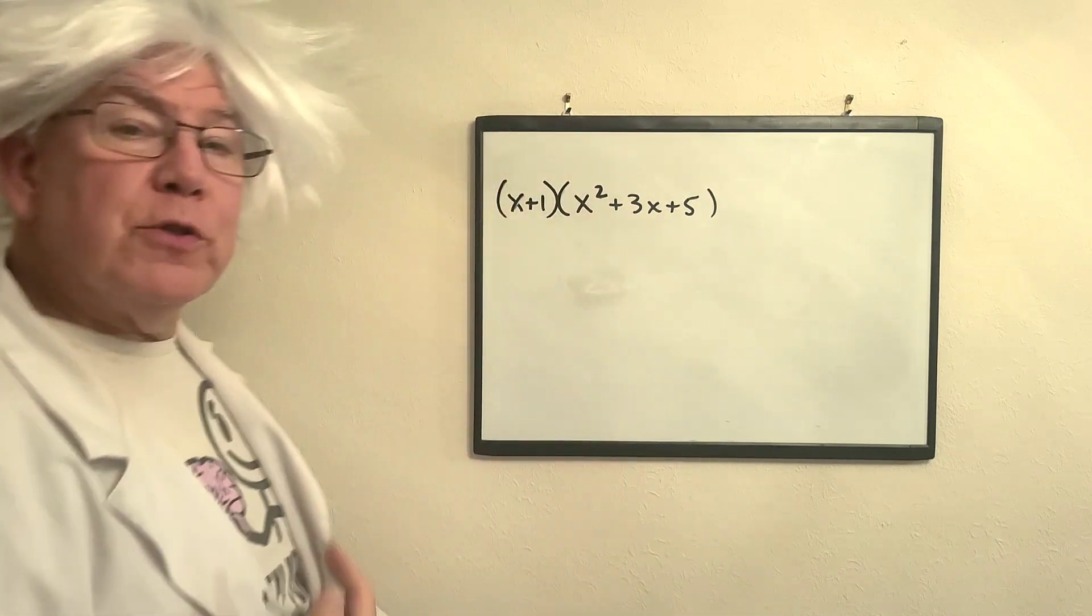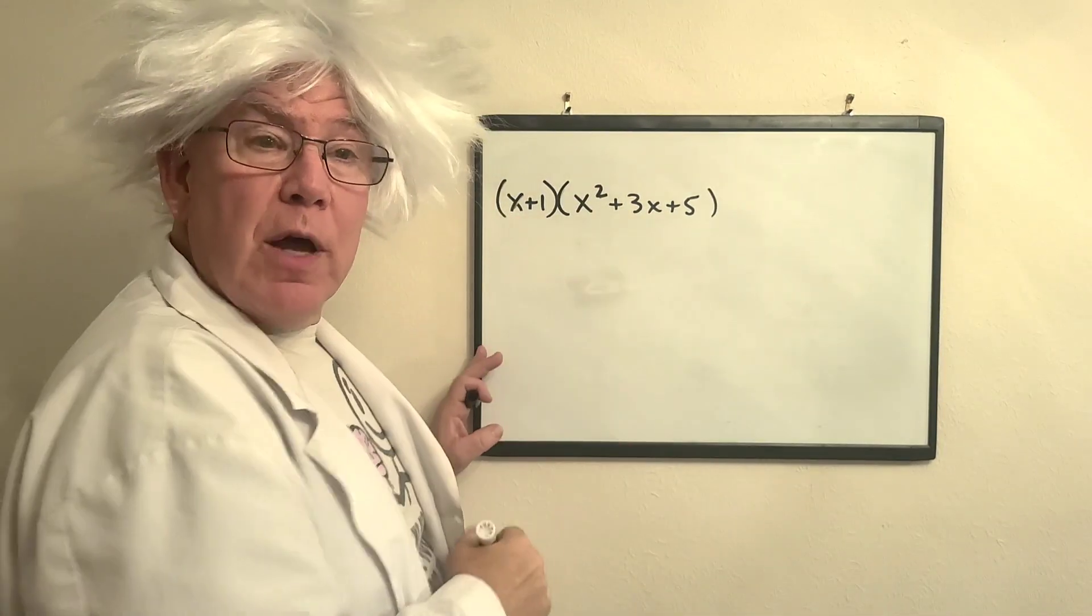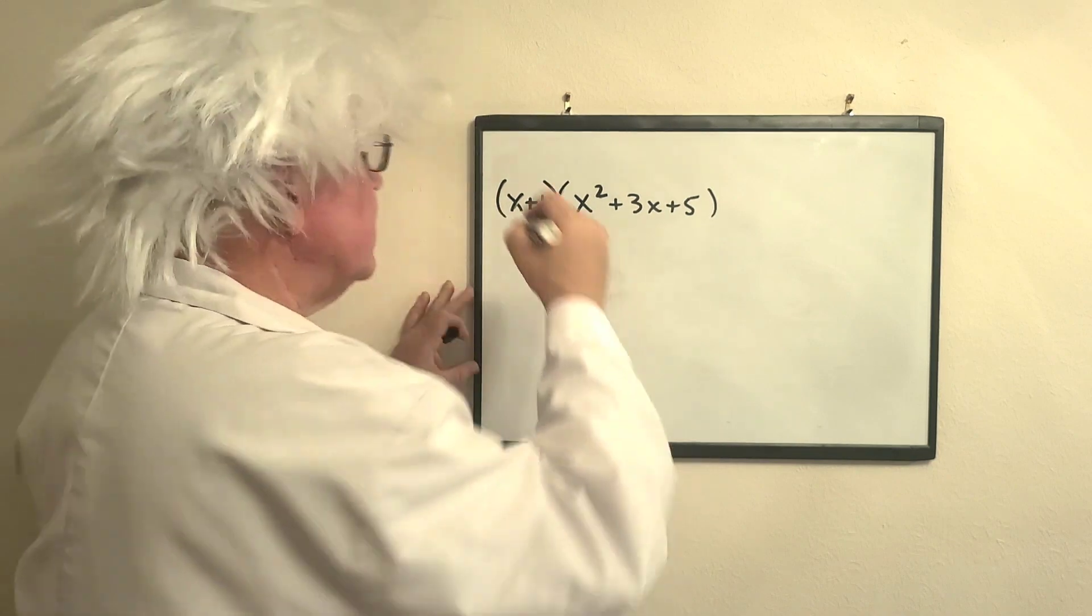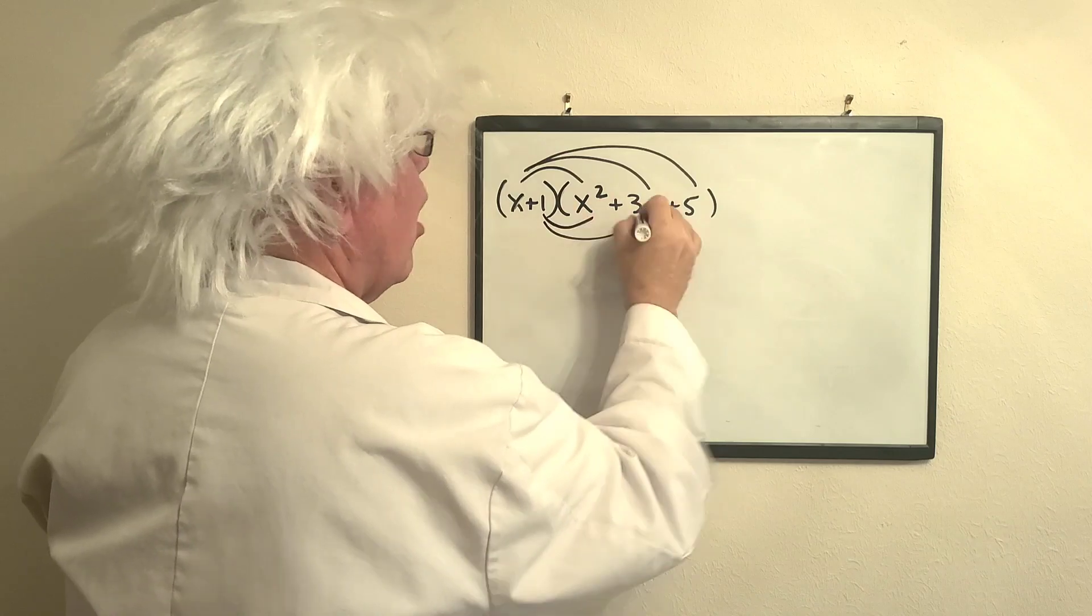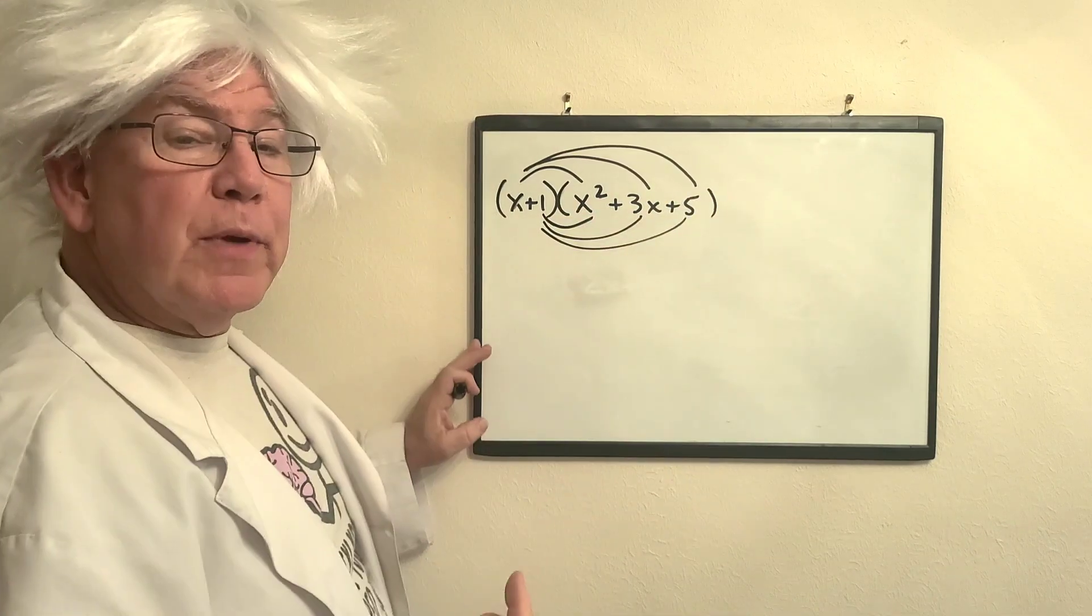Now we're going to multiply this together. This is a binomial times a trinomial, so the first thing I'm going to do... all that means is those are multiplication lines.